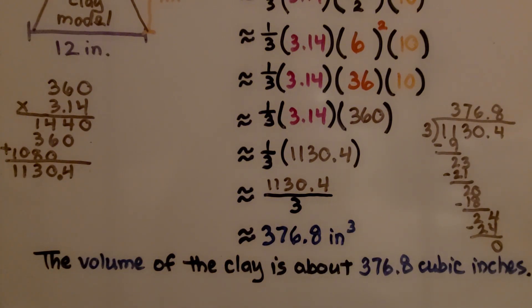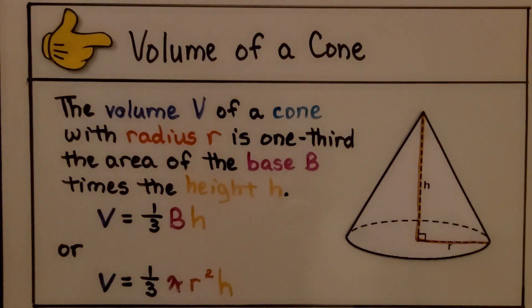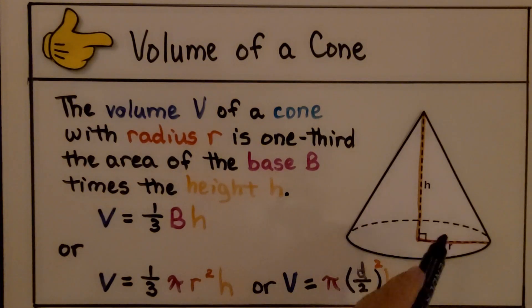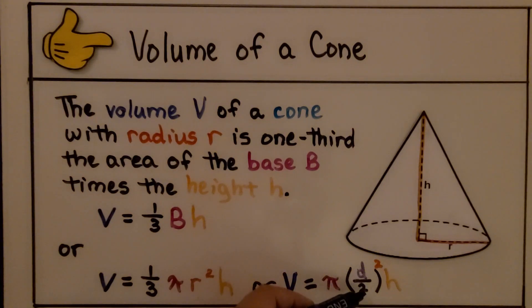It told us to round it to the nearest tenth. Well, it is at the nearest tenth. The volume of the clay is about 376.8 cubic inches. Just remember, when we know the area of the base already, we can use volume equals one-third base times height. When we don't know the base area, we use V equals one-third pi r squared h. If we're only given the diameter and not the radius, we can multiply pi and the height by the diameter divided by 2 squared.